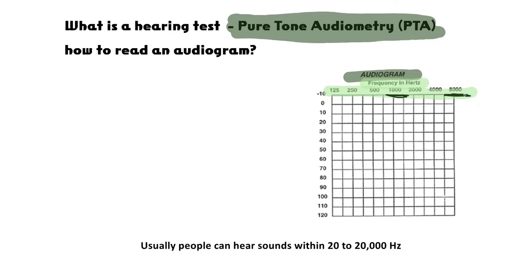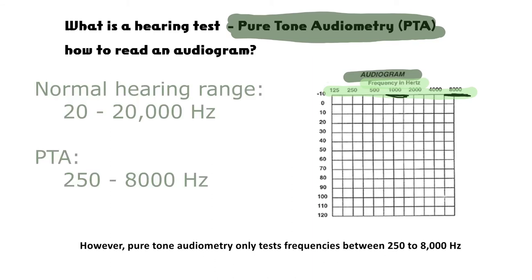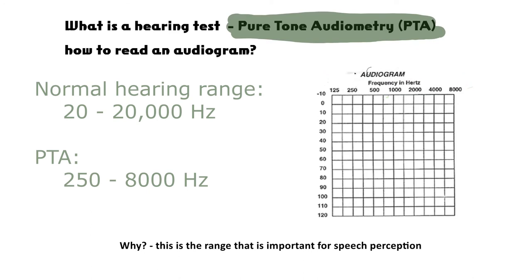Usually people can hear sounds within 20 to 20,000 Hz. However, pure-tone audiometry only tests frequencies between 250 to 8000 Hz. Why? This is the range that is important for speech perception.